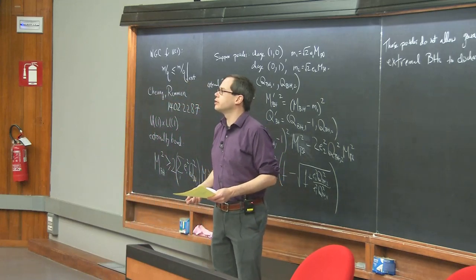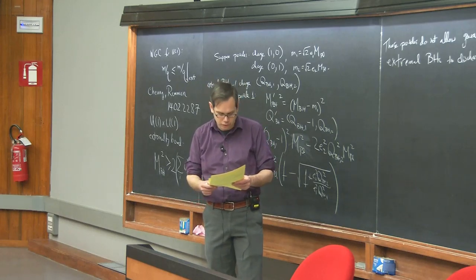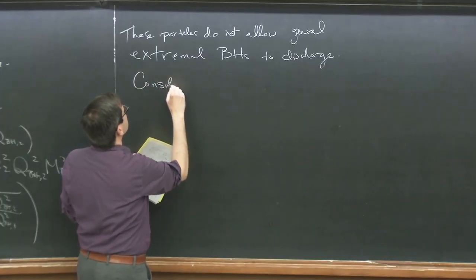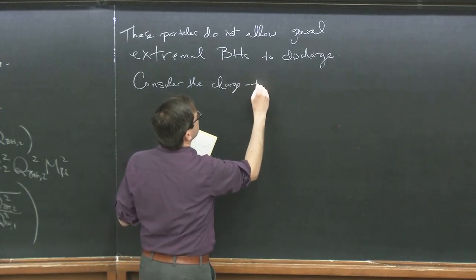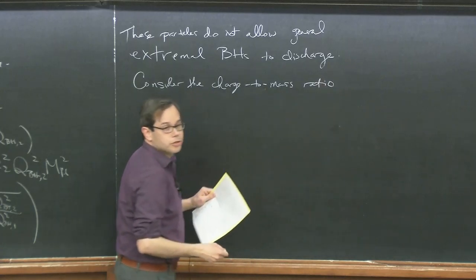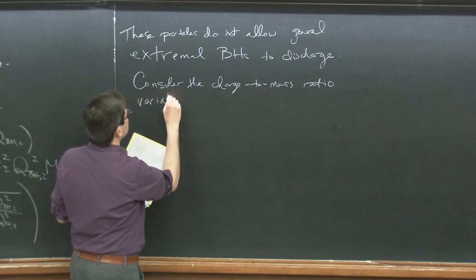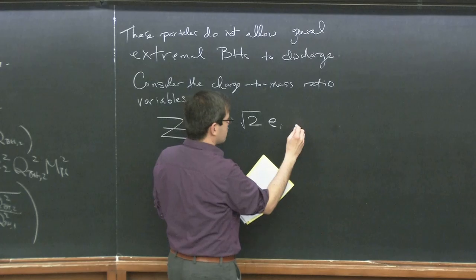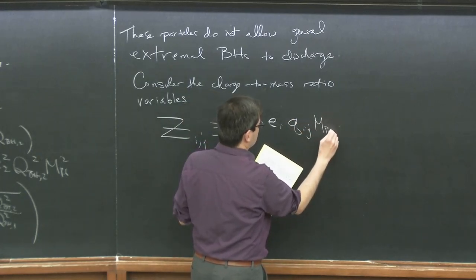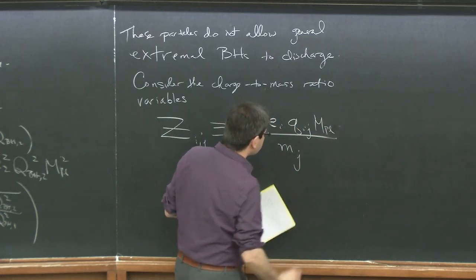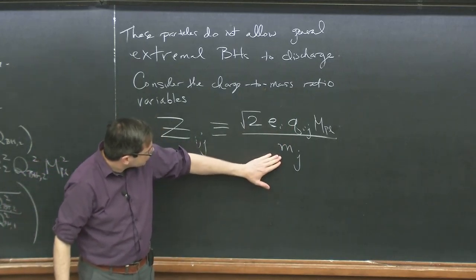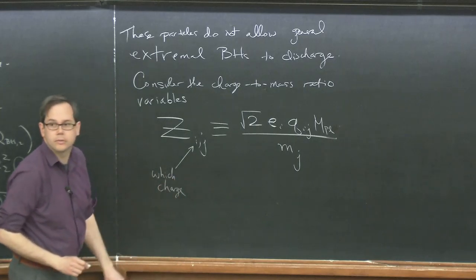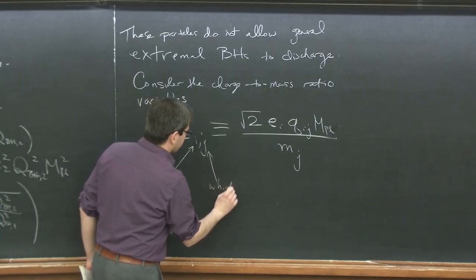It turns out there's a simple geometric criterion to understand the correct condition to allow these black holes to discharge. Chung and Raman formulated this condition as follows: consider the charge-to-mass ratio of a particle. We have a set of variables Zij, given by the ratio of the charge of a particle in Planck units divided by the mass. The index i labels which charge we're talking about — which gauge group — and the index j labels which particle.